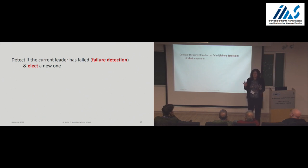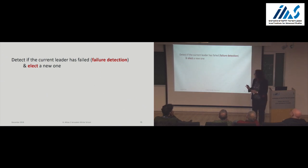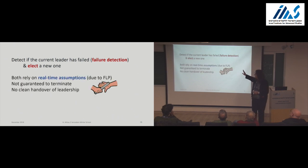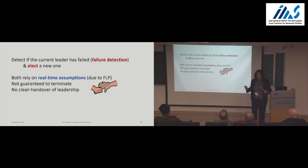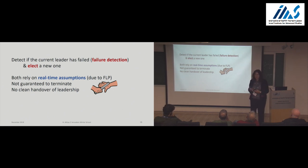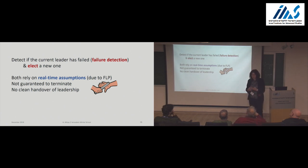There's no way around it: detecting that the leader has failed and truly electing another leader must rely on real-time assumptions. This is due to FLP — somewhere inside you will hide real-time assumptions, do timeouts, assume messages arrive on time. Because of FLP, this is not guaranteed to terminate unless the system behaves nicely. Furthermore, it's really hard to do a clean handover of the leadership. The leadership might leave before telling everyone where it was — in the middle of doing stuff — and the new leader will be elected.